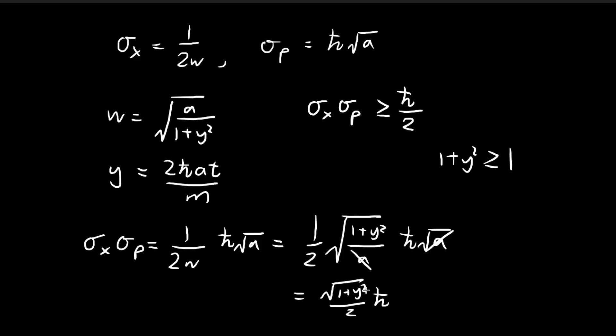Instead of writing 1 plus y squared, we can write this as larger than the square root of 1 divided by 2ℏ. The square root of 1 is just 1, so we get ℏ divided by 2.